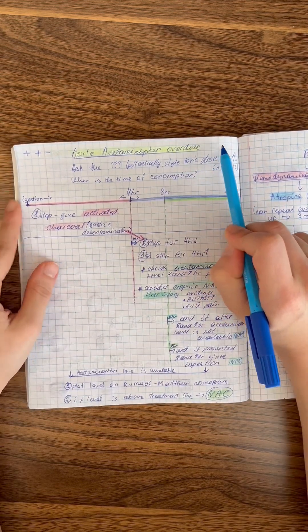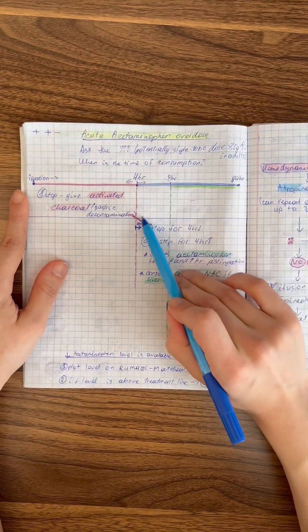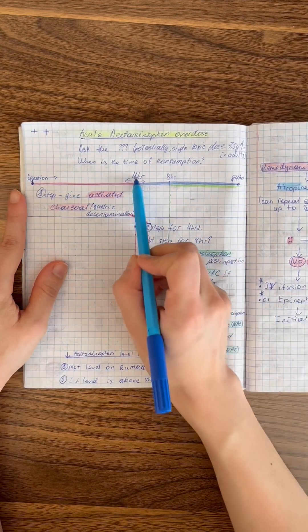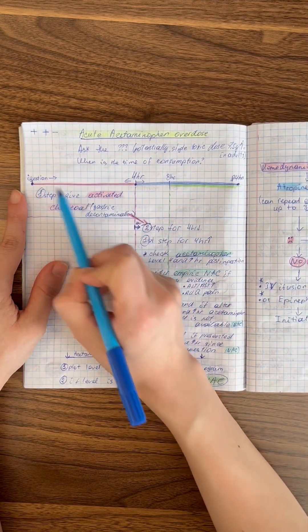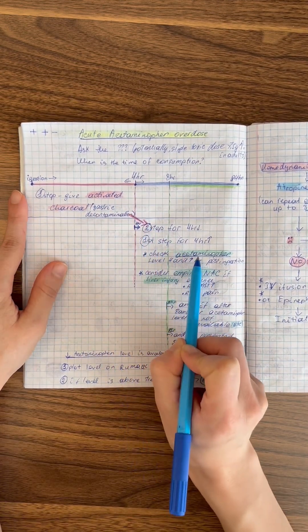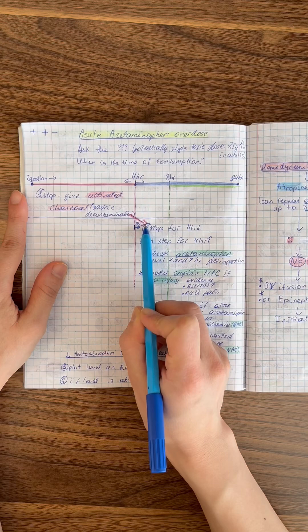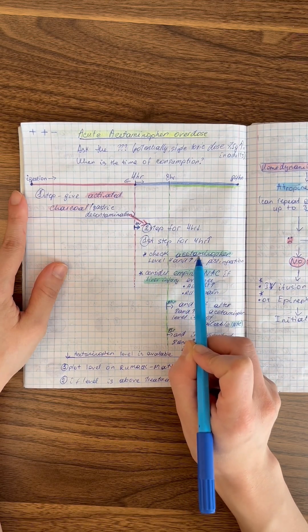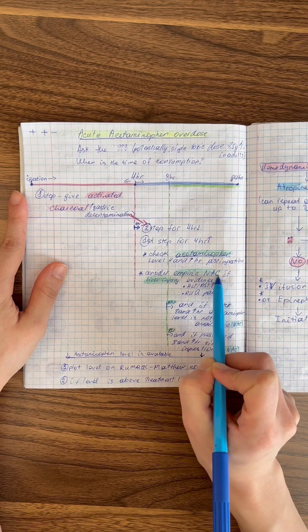After four hours, for example, six hours, we will check the acetaminophen levels in the blood. However, even if the patient presents before four hours and we already gave activated charcoal, checking the acetaminophen level will be the second step. Since it takes time to get the laboratory analysis, we need to decide if we should give empiric NAC.